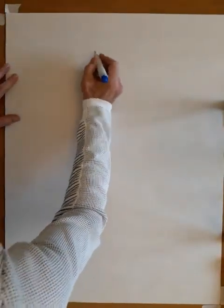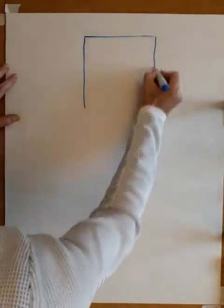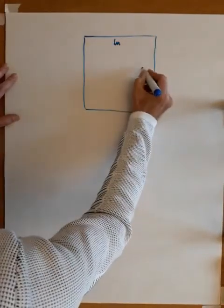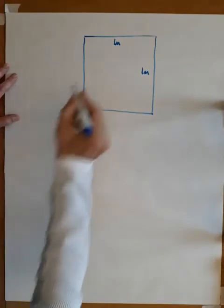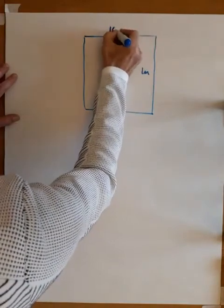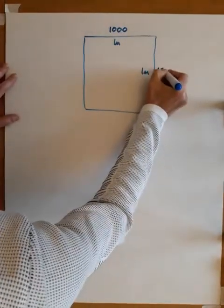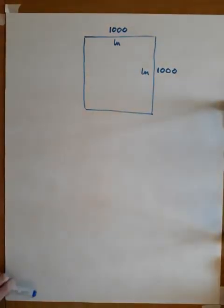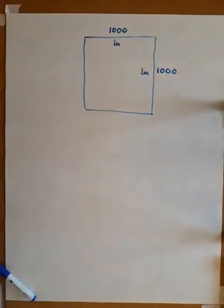Let's take one square meter. So this is one meter by one meter, which is quite large. In terms of millimeters, there's a thousand millimeters along there and there's a thousand millimeters down there. So the question is, how many square millimeters are there in here?